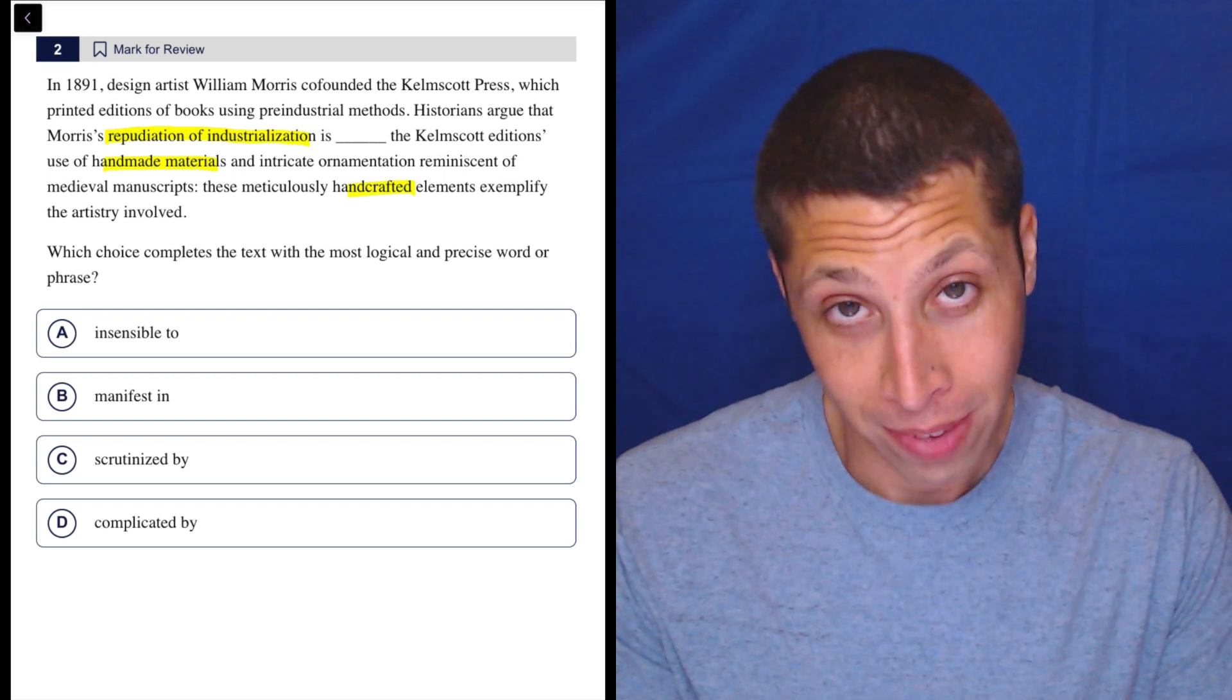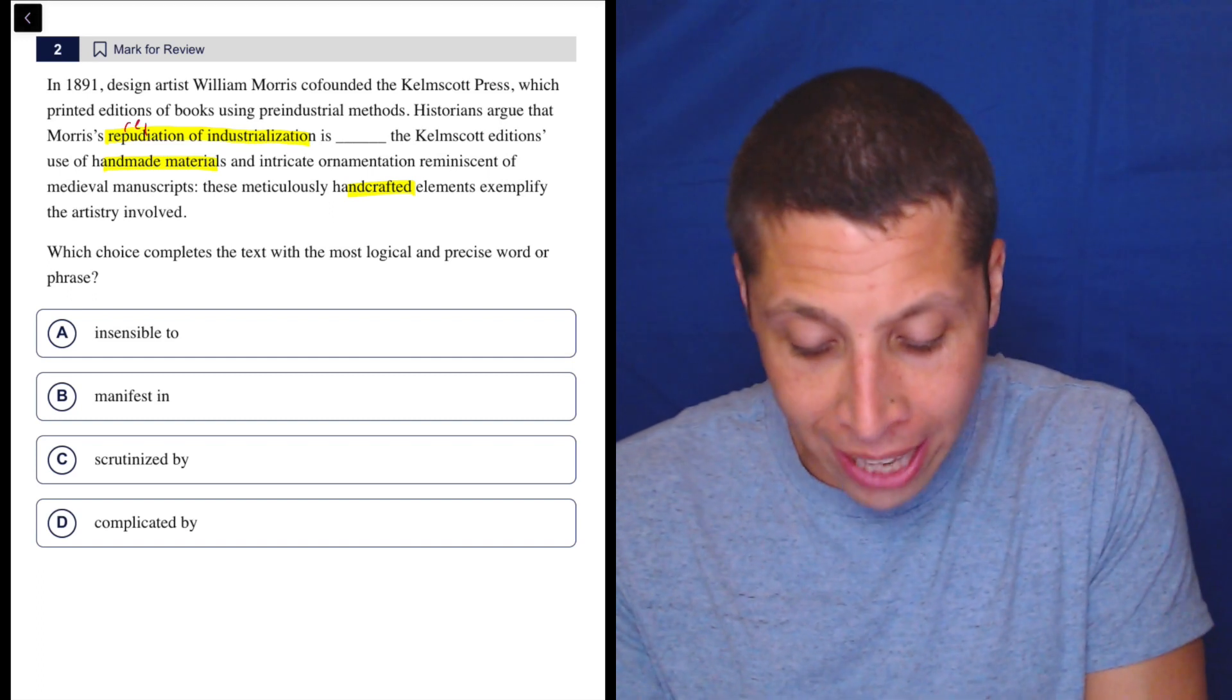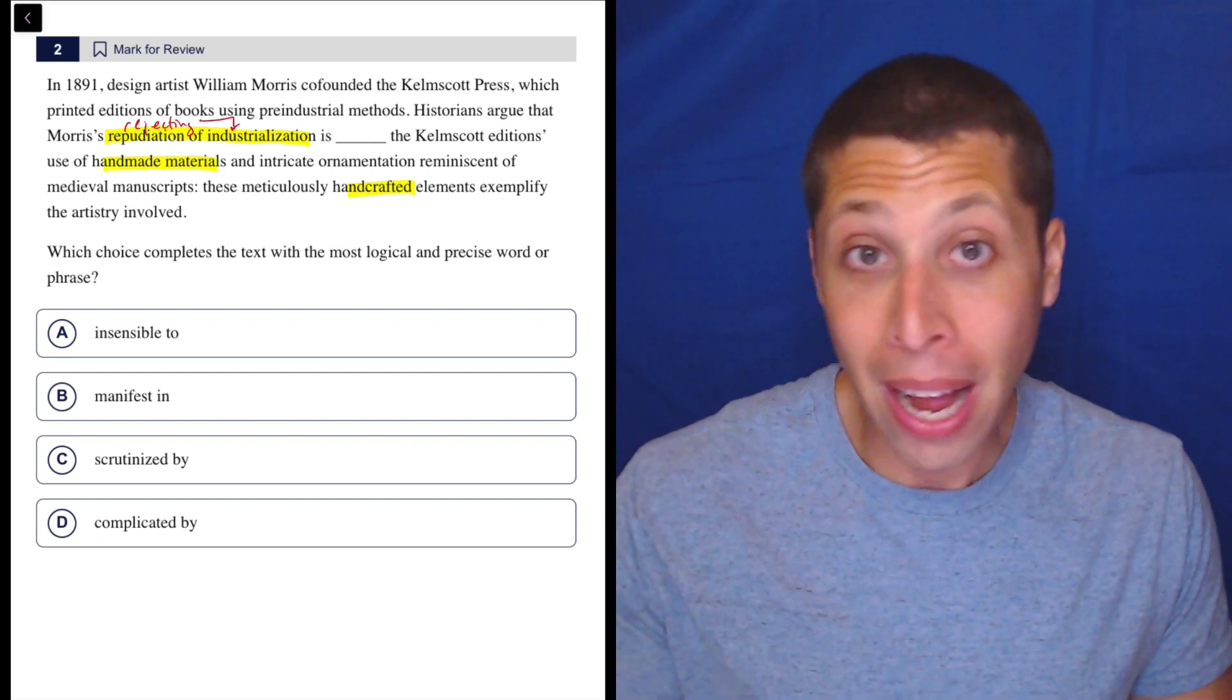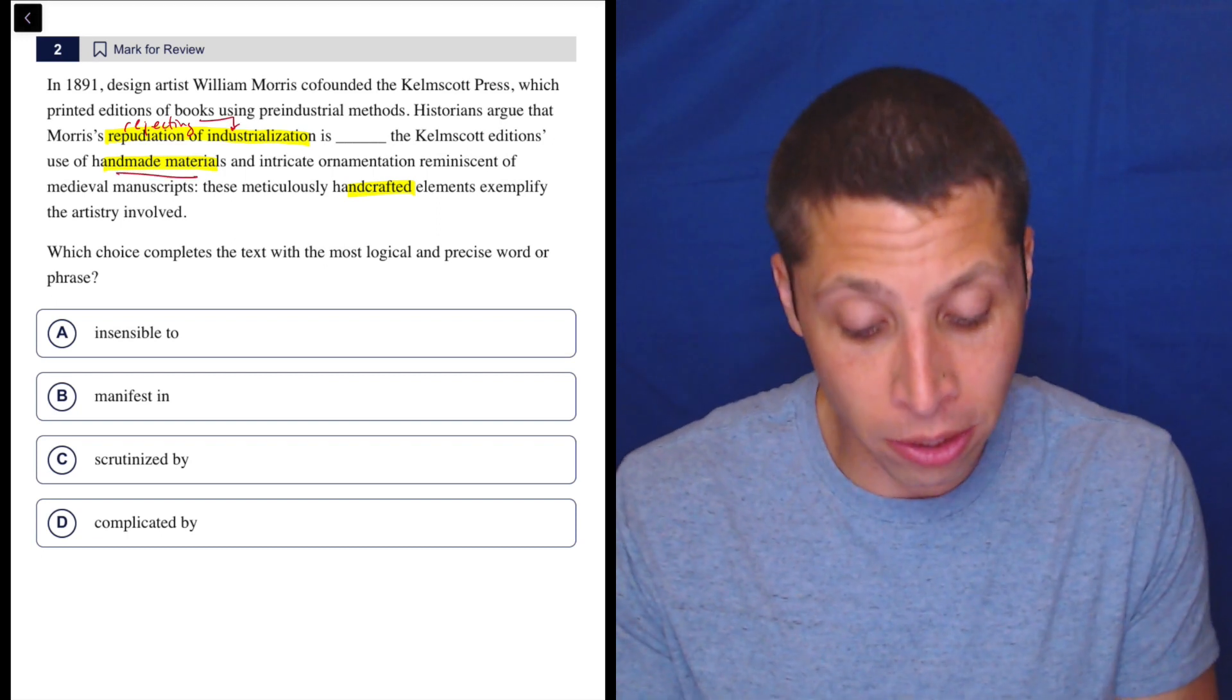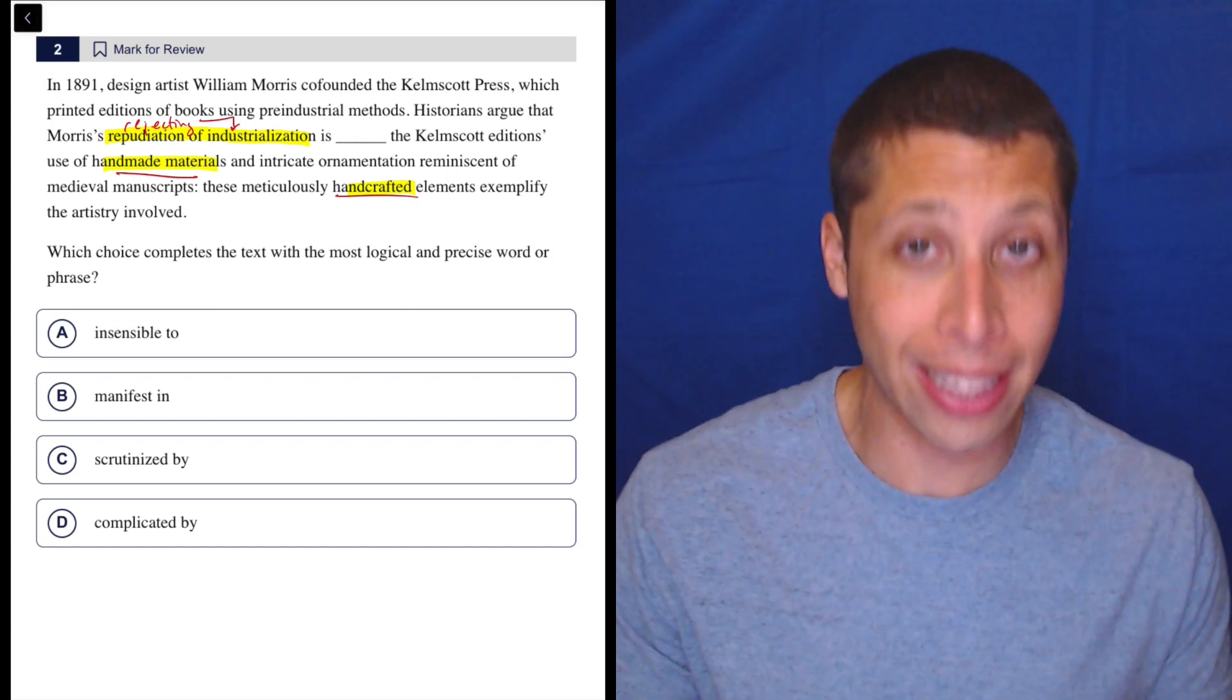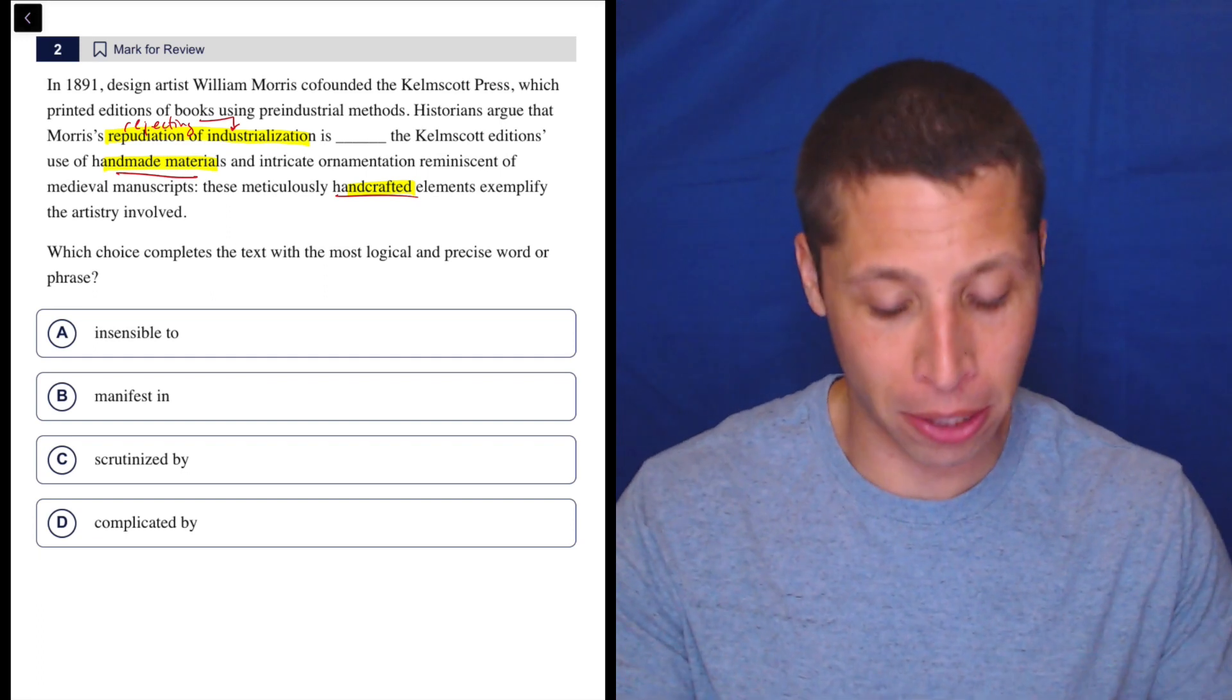So here's what they're saying. Morris is rejecting industrialization by using handmade materials, handcrafted elements. There's repetition, main ideas are repeated ideas, so we definitely get that. But if we don't have a repudiation, hard to say, we are going to be in some trouble here.